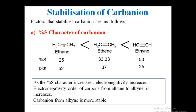In ethane, this carbon has only 25% S character, so less electronegativity, and therefore the protons on this carbon cannot be easily detached. Hence ethane is the weakest acid. This is about the percentage of S character. Let's go to the next factor: inductive effect.